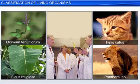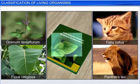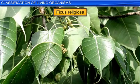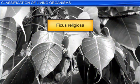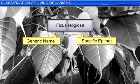Scientific names help avoid ambiguity as each organism has just one name. However, certain universal rules are followed while providing a scientific name to a known organism. For example, the scientific name for the sacred fig, commonly known as the peepal tree in India, is Ficus religiosa. Here, as you can see, the scientific name has two components: the generic name and the specific epithet.